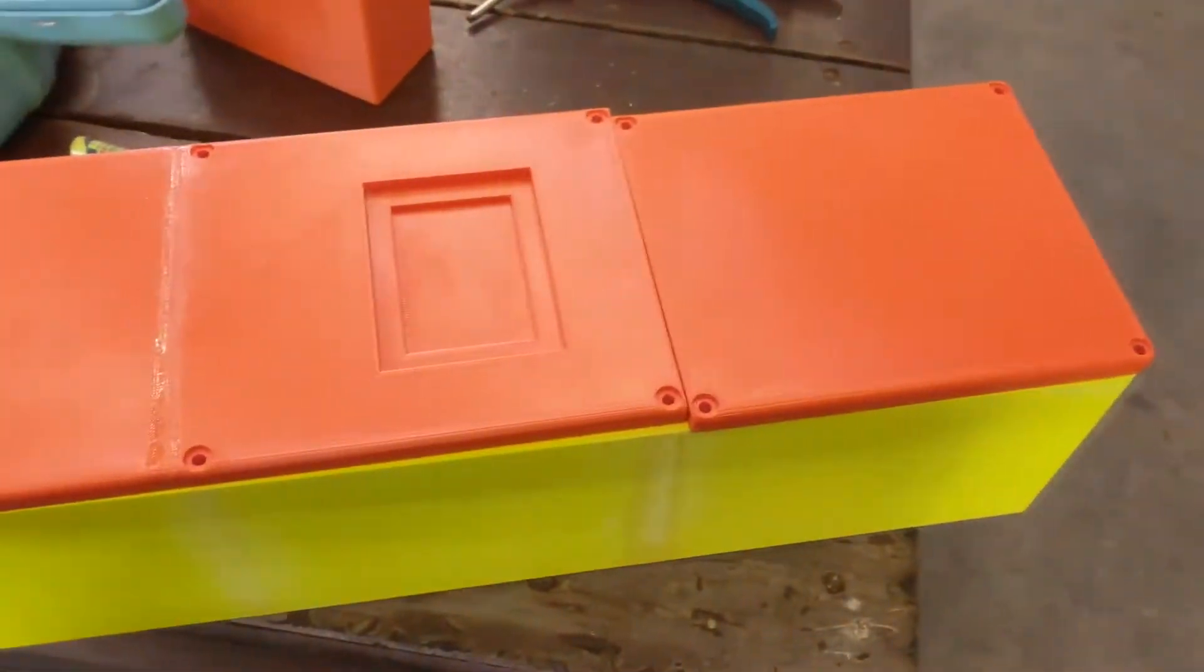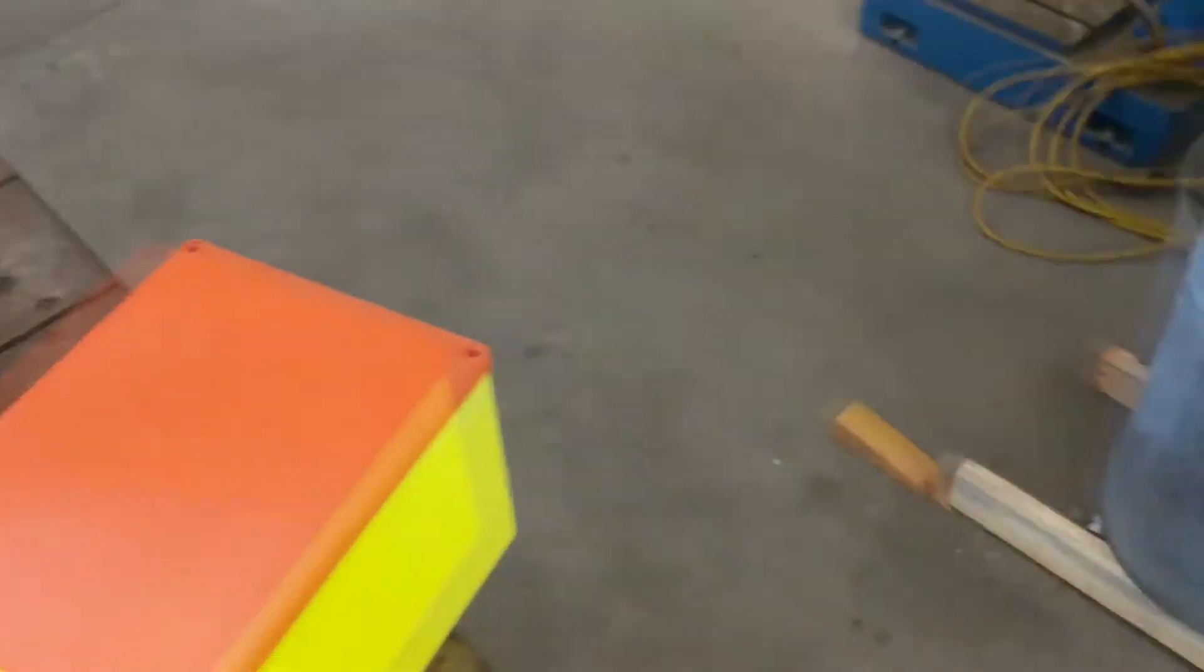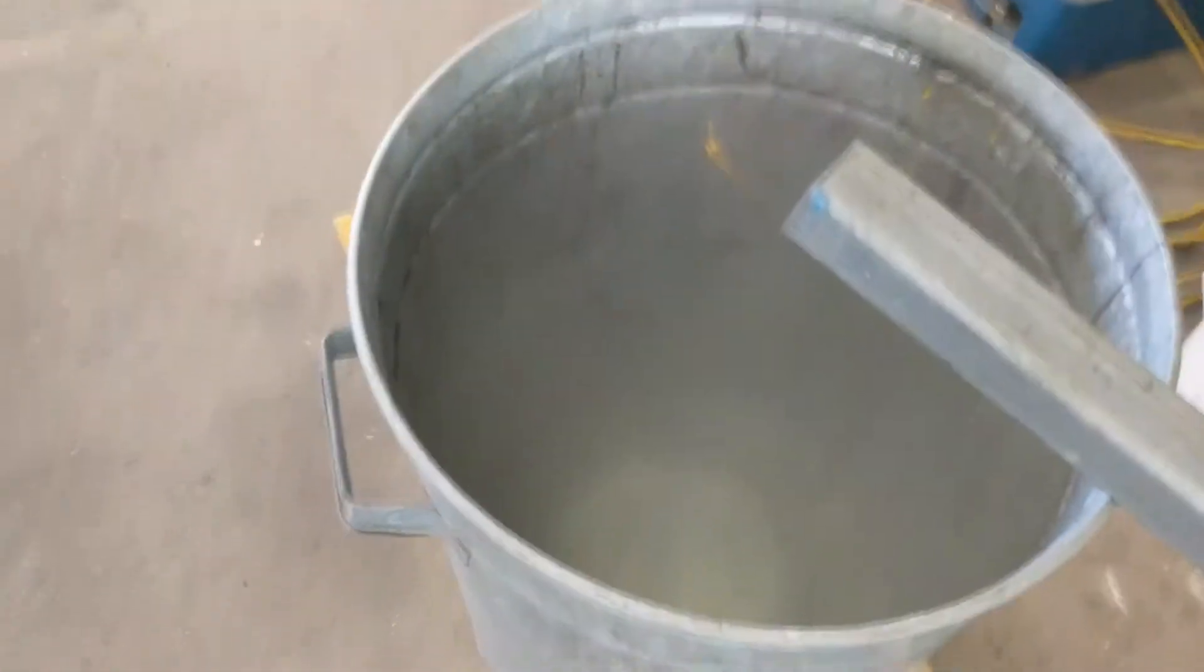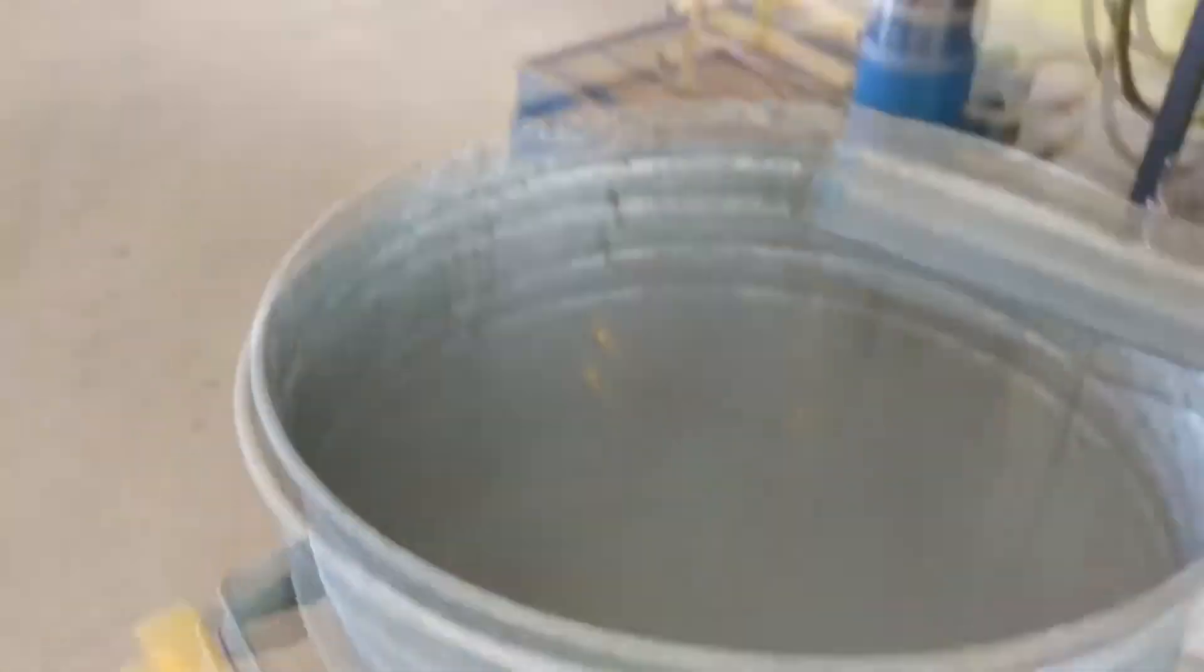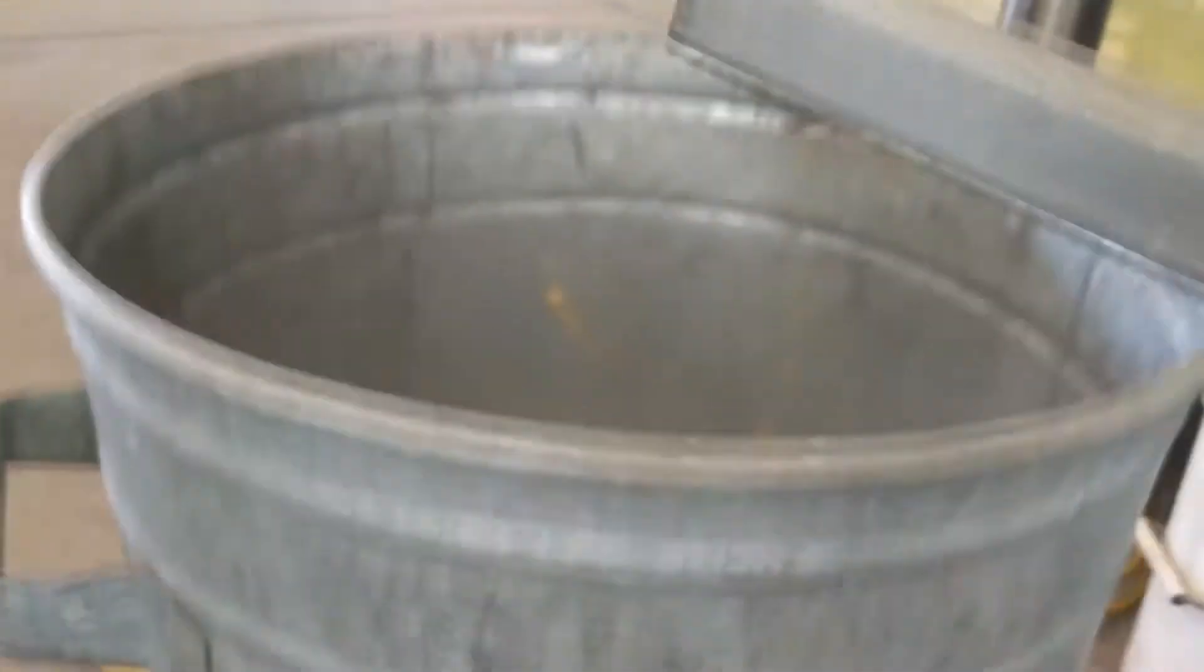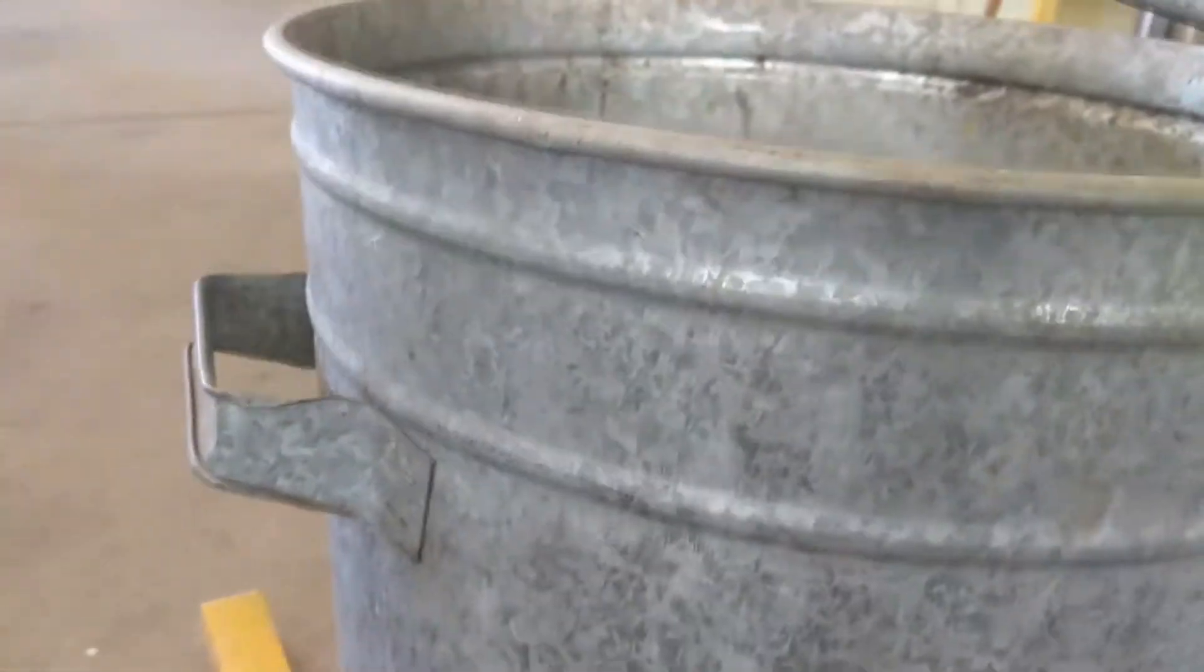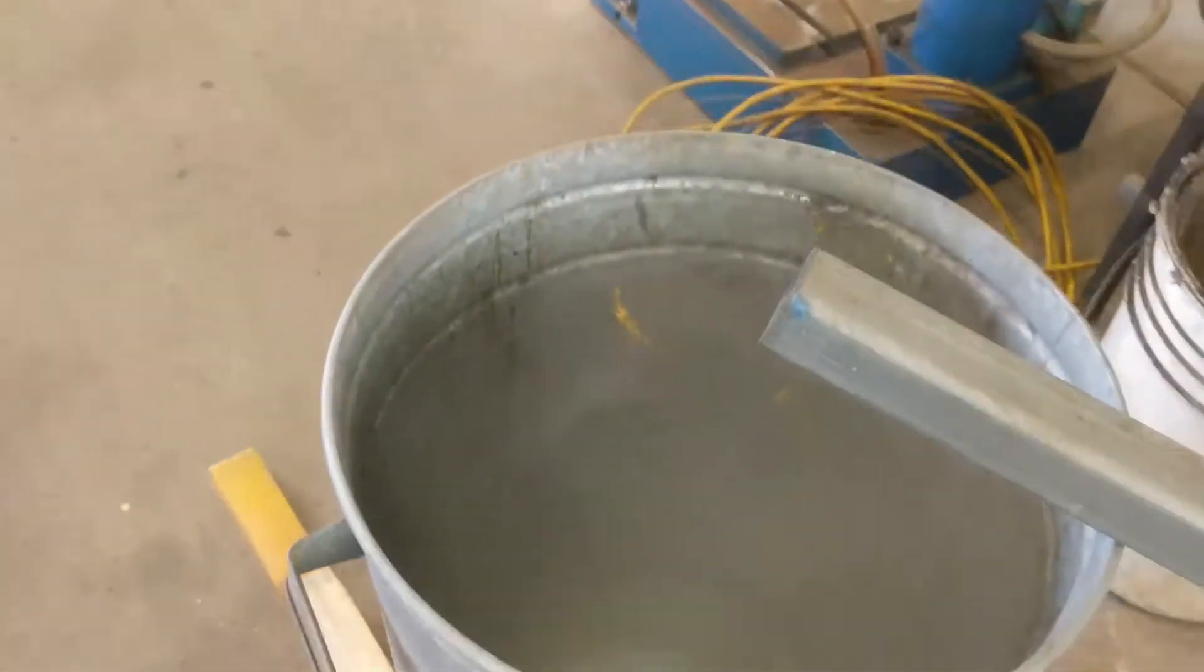So this is done on the Dimension Elite printer, and then what we have here is a garbage bin on top of a hot plate. We've got acetone, and you can see the acetone vapor there. So we're going to treat this with acetone vapor just to finish it off.